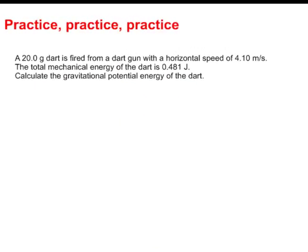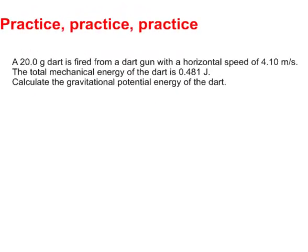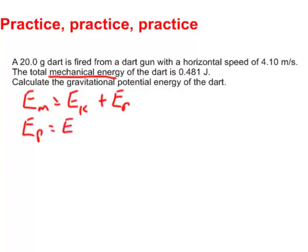Next: a 20 gram dart is fired from a dart gun with a horizontal speed of 4.10 meters per second. The total mechanical energy of the dart is 0.481 joules. Find the gravitational potential energy. This uses the concept from the previous lesson: mechanical energy equals kinetic energy plus potential energy. So the potential energy will just be the mechanical energy minus the kinetic energy.